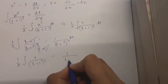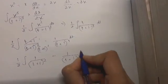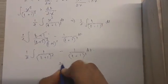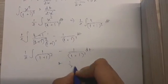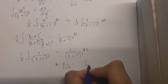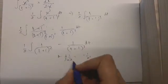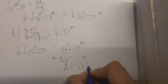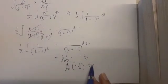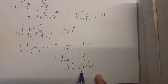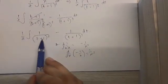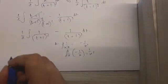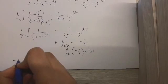We know that the differentiation of one over x is minus one over x squared, and the differentiation of minus one over x is one over x squared. So the integration of one upon t plus one the whole square is minus one upon t plus one. So here we have one-half times one upon t plus one.